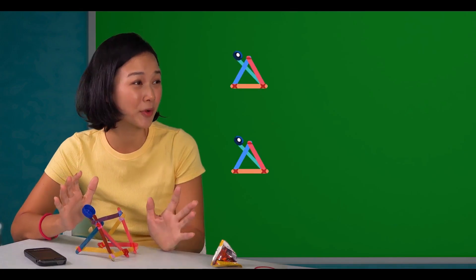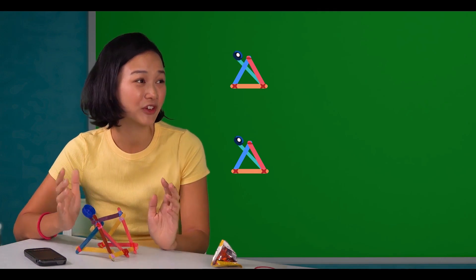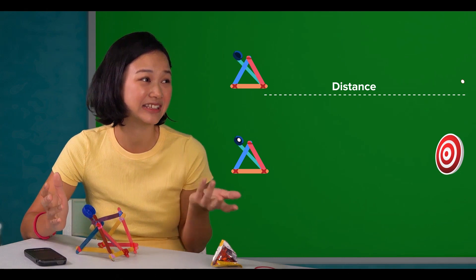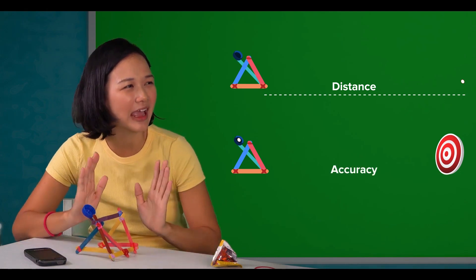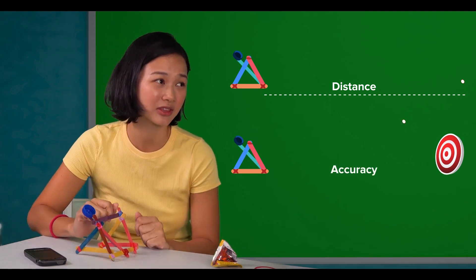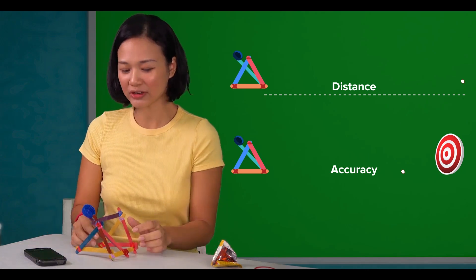Awesome! But how do you determine whose catapult is better? We have it sorted out. There are two components to this competition. First, we compete on how far the projectile goes. And second, we compete on how accurate we can shoot a target with a catapult. We each have three tries.